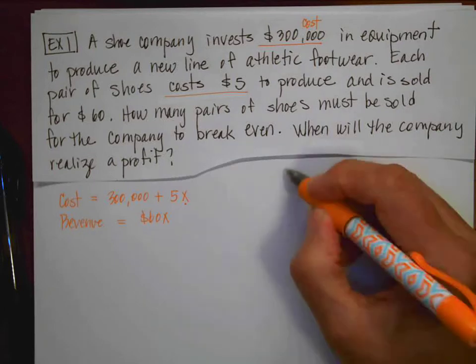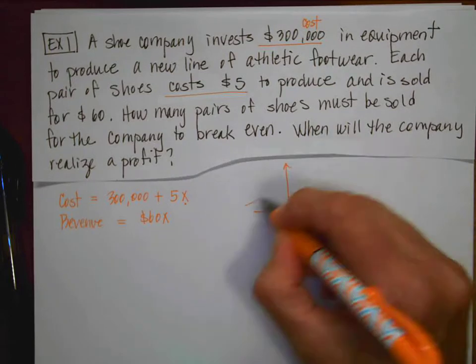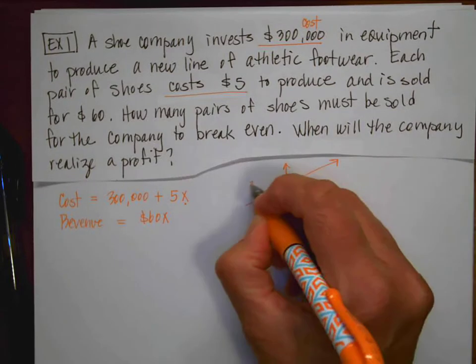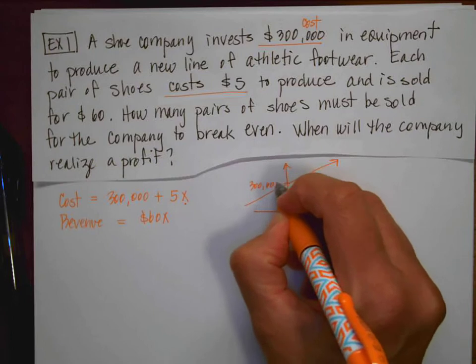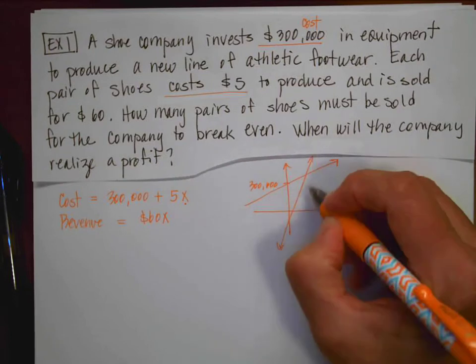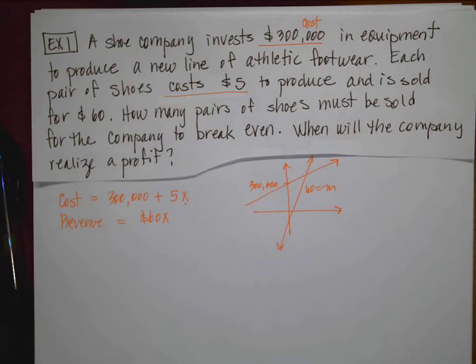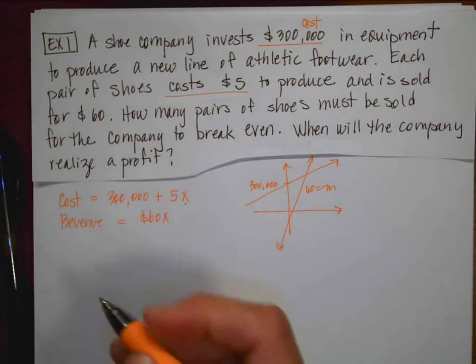So then we could do this in our grapher, but the problem with these in your grapher is it kind of messes up the window. Because if you'll notice, the y-intercept on this guy is $300,000. And then the slope on the second equation is $60. So that means that the window can sometimes be hard to find. So I would recommend that you just do the math.